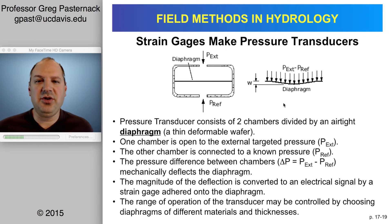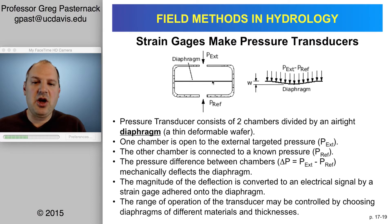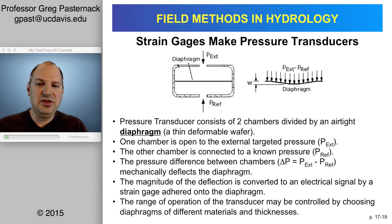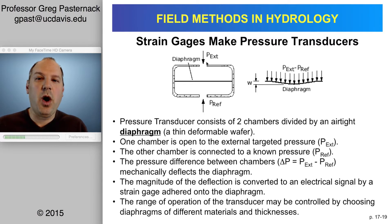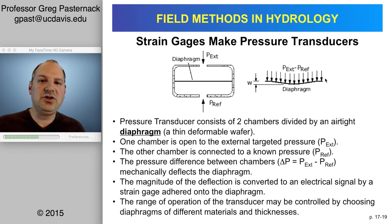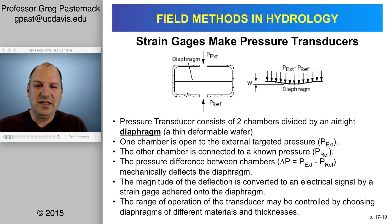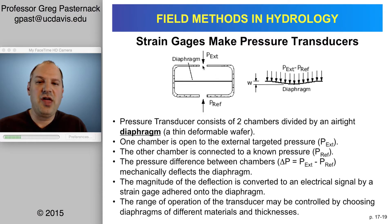To turn a strain gauge into a depth sensor, we put a strain gauge on something called a diaphragm — a bendable material that responds to a difference in pressure. Imagine a round support with the diaphragm inside. On one side you have atmospheric pressure, and on the other side you have atmospheric plus water pressure. That extra weight of water pressure causes the diaphragm to deflect, which flexes the strain gauge and changes the electrical conductivity. So a pressure transducer consists of a diaphragm that gets deformed depending on the difference in pressure internal and external to the sensor.